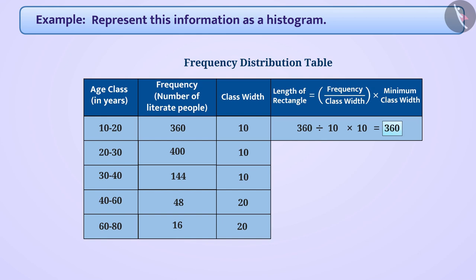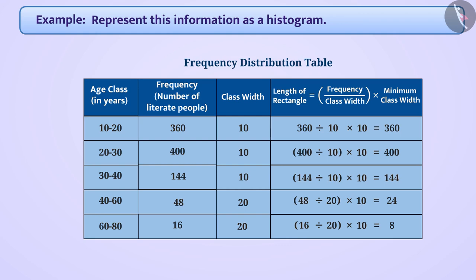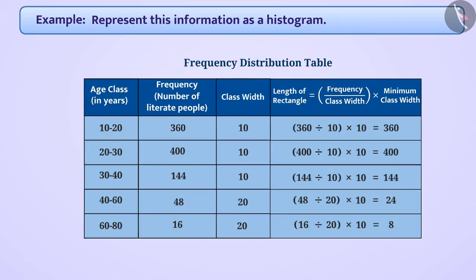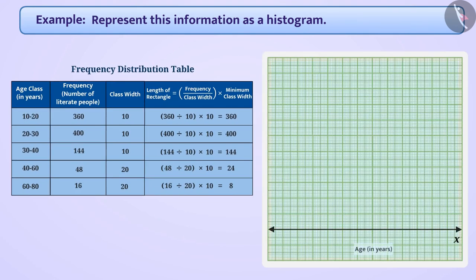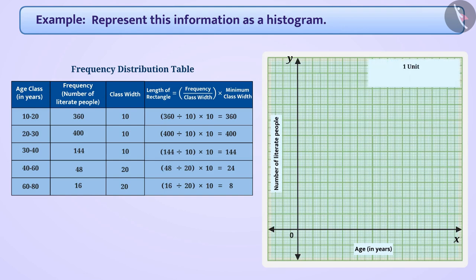Similarly, we will find the length of rectangles for all age groups. Now, we will show the age groups on the x-axis and the number of literate people on the y-axis. For this, we will take 1 unit is equal to 10 years on the x-axis and 1 unit is equal to 40% on the y-axis.